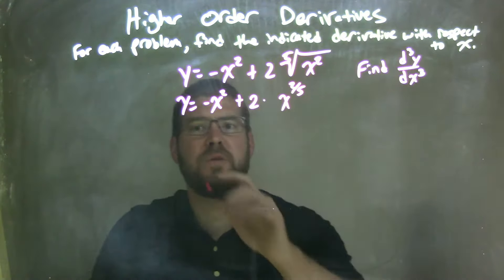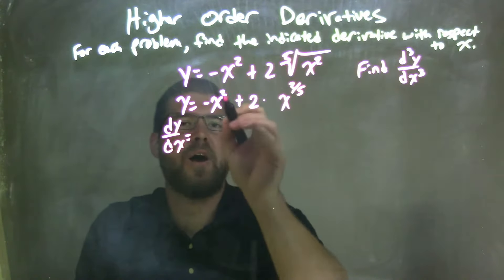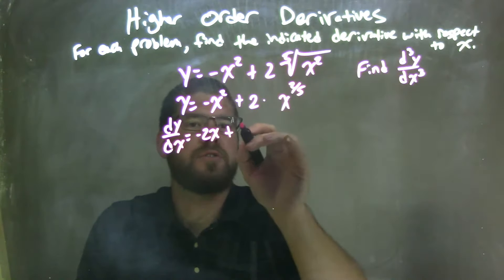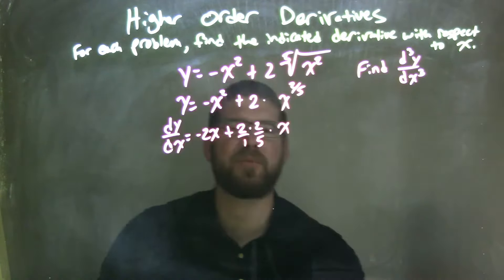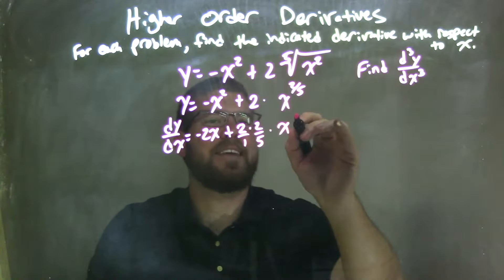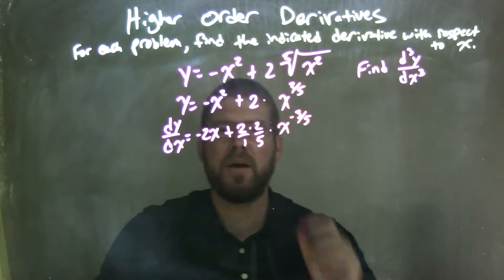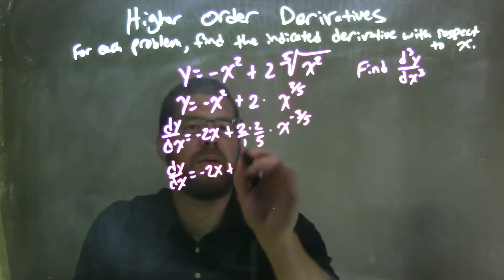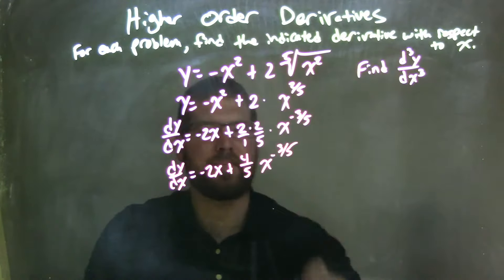Now I'm going to take the first derivative. Using the power rule, dy/dx: 2 comes out front, so we have negative 2x to the first power plus — well, 2 times two-fifths times x, and we subtract the exponent by 1. When we subtract two-fifths by 1, that's a negative three-fifths. So to simplify, dy/dx equals negative 2x plus four-fifths x to the negative three-fifths power.